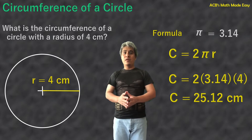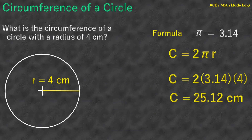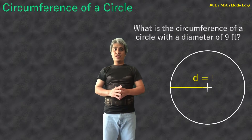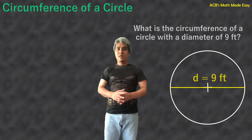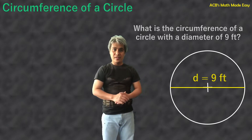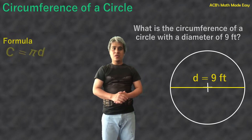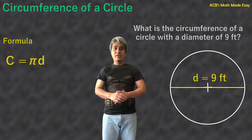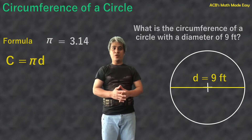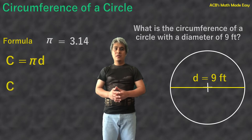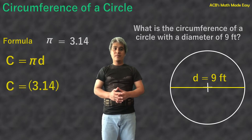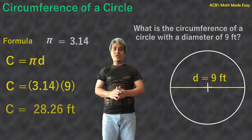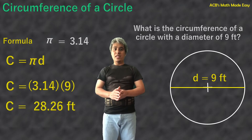In our next example, diameter will be given. What is the circumference of a circle whose diameter is 9 feet? The formula if diameter is given is C equals pi times the diameter. The value of pi is 3.14. Circumference equals 3.14 times 9, so the circumference of the circle is 28.26 feet.